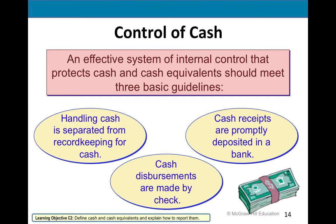To make sure cash is managed effectively and efficiently, you've got to follow three things: make sure it's kept separate — who handles the cash from the recordkeeping. Make sure everything is paid by check so you have documentation and can trail it. And if you receive large cash sums, make sure you deposit them in the bank swiftly — don't let it sit in the vault or at the company for a few days.